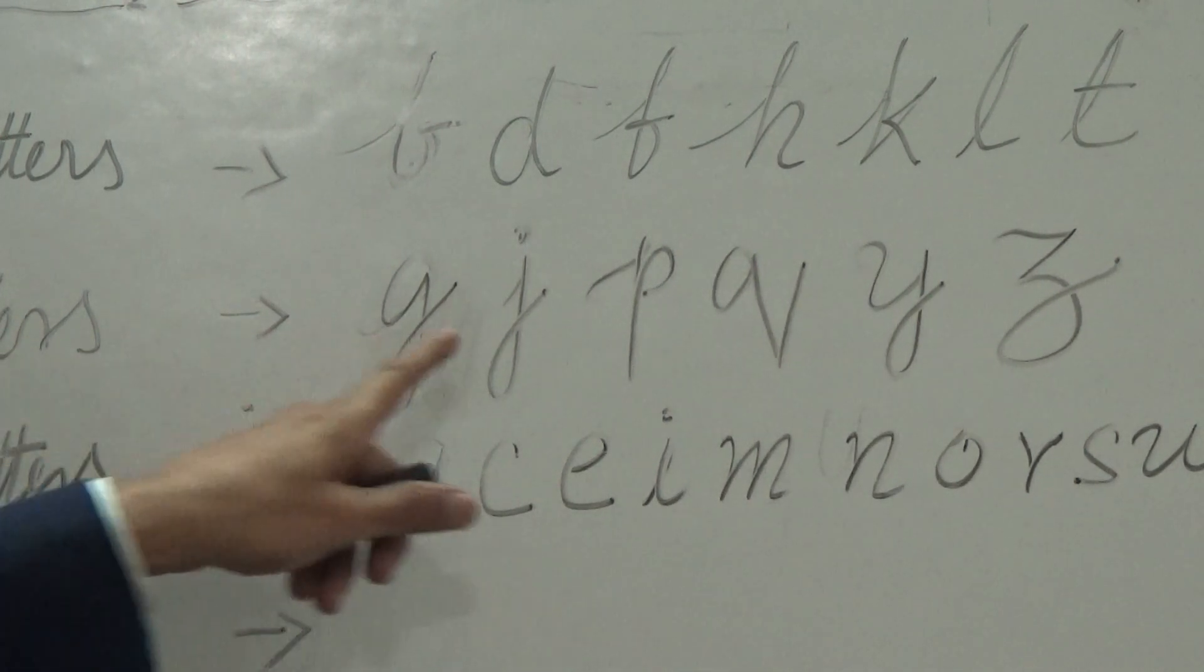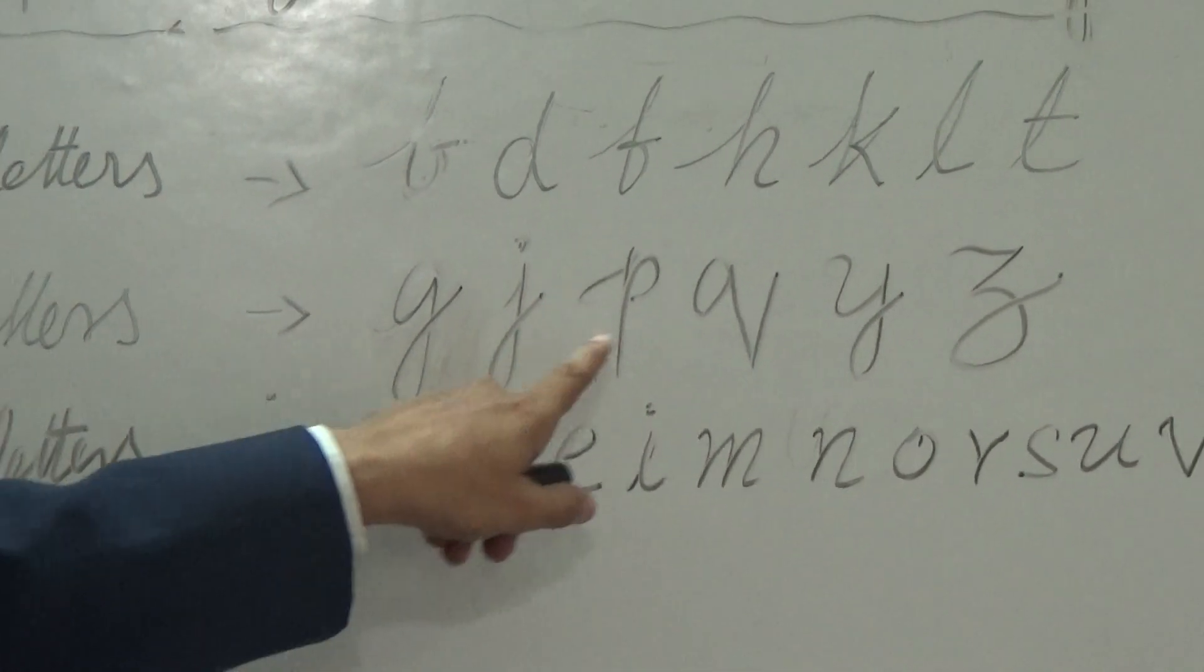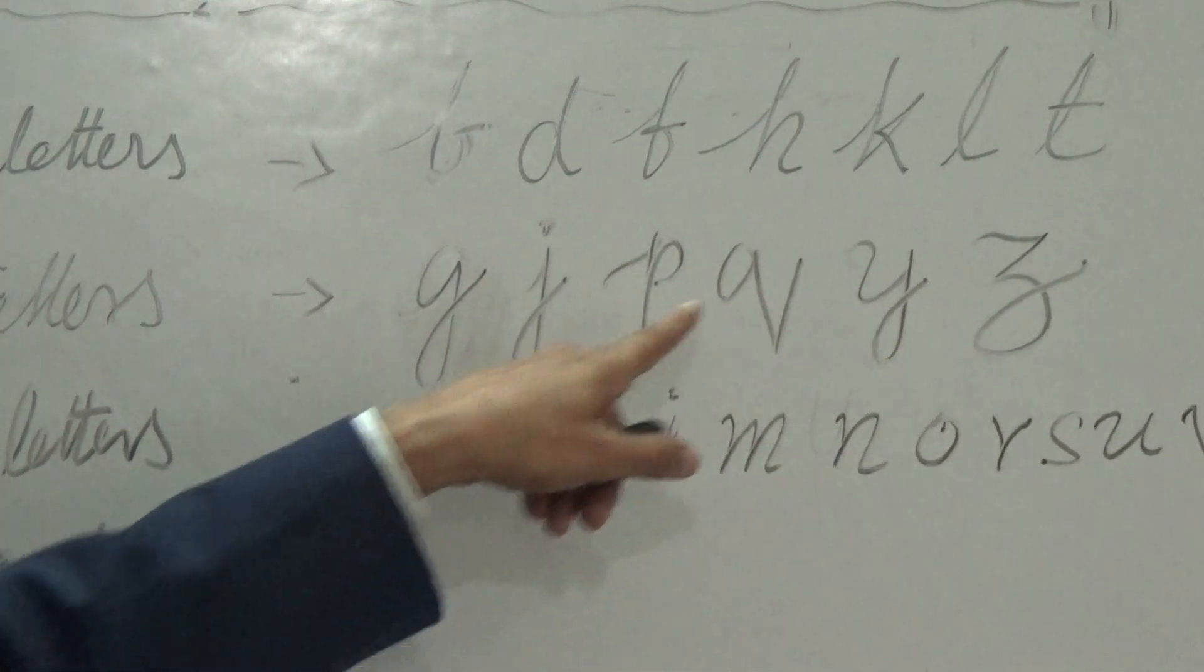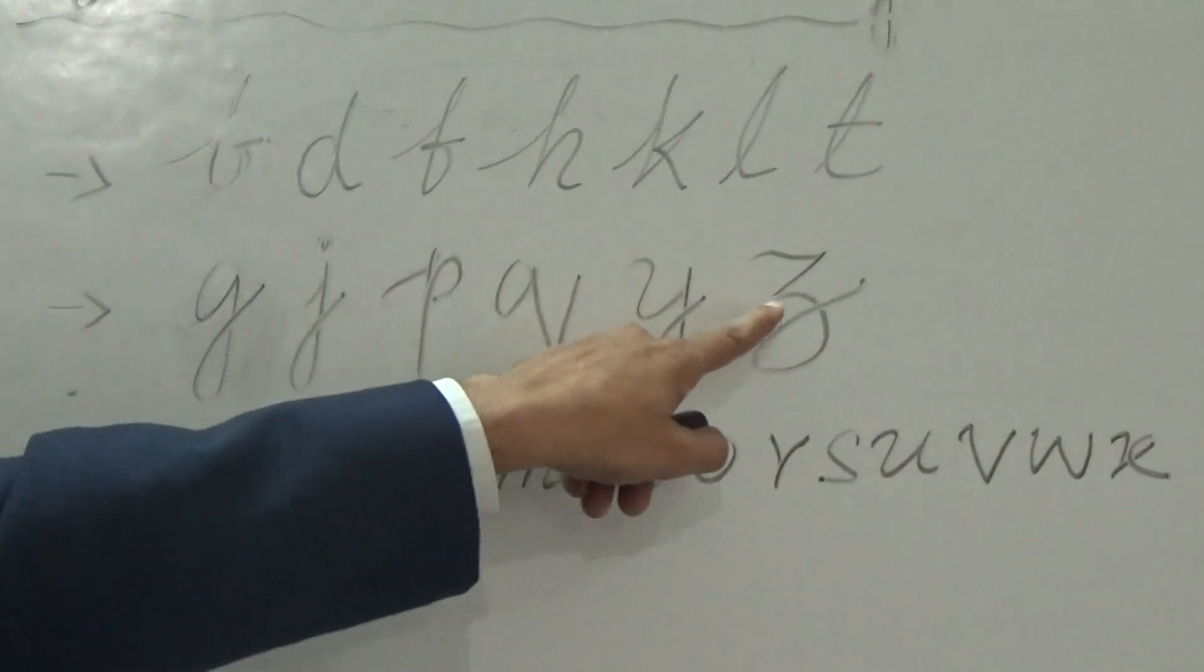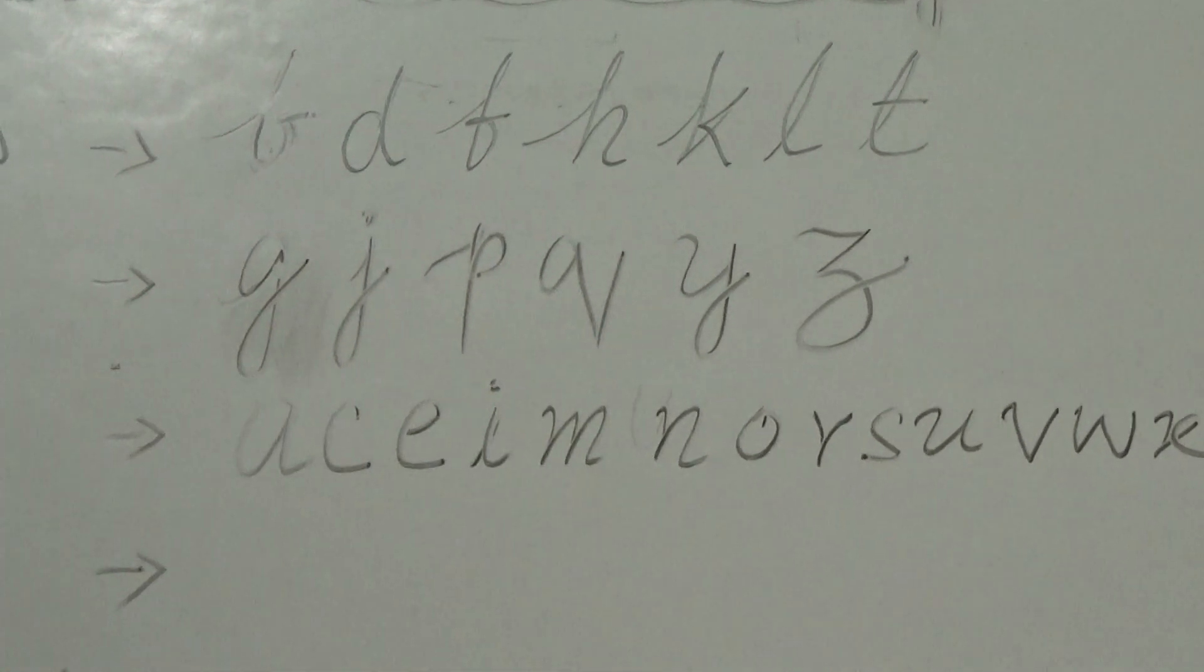And the second type of letters are called downstroke. Here G, J, P, Q, Y, Z. All these are downstroke. These parts may be in the middle and stroke will be downwards.